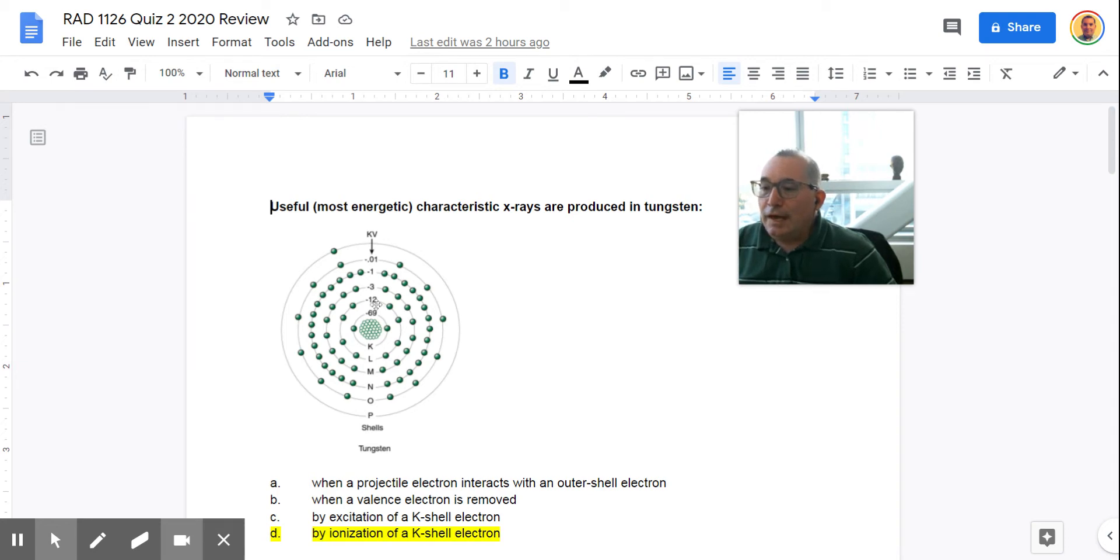If an electron from any other shell, really L, M, N, O, P, these are already very low. So let's say the next highest would be 12. So if one of these electrons here is vacated, and let's say an electron from the M shell falls down, it's going to be 12 minus 3, which is 9, which is much, much lower. So the only useful x-rays are going to be those that come by an ionization of a K-shell electron.